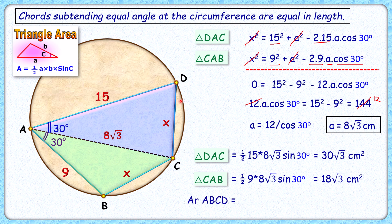The area of quadrilateral ABCD is the sum of the pink triangle and yellow triangle, which is 48√3 cm². That's our answer. I hope you enjoyed the solution. I will see you in the next video. Till then, bye bye!